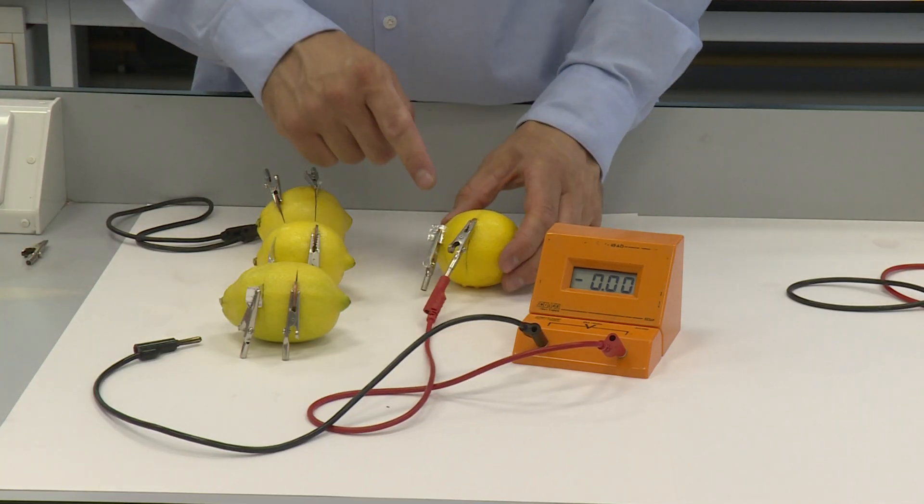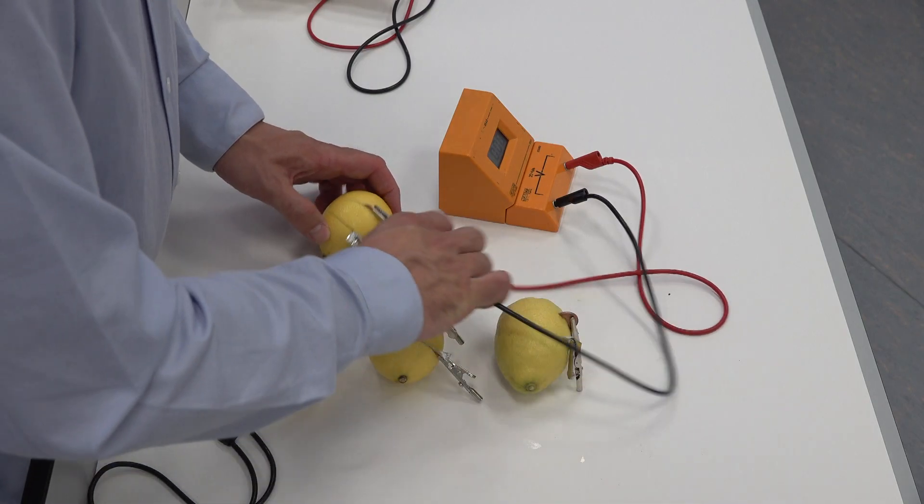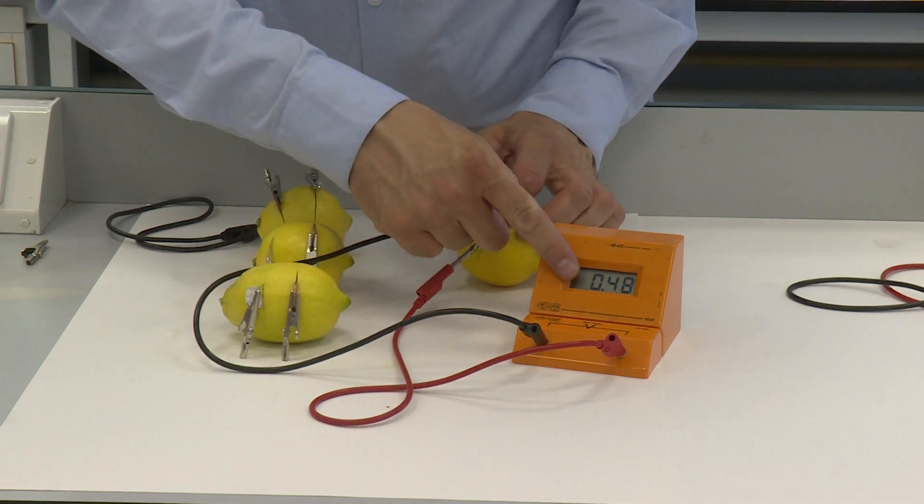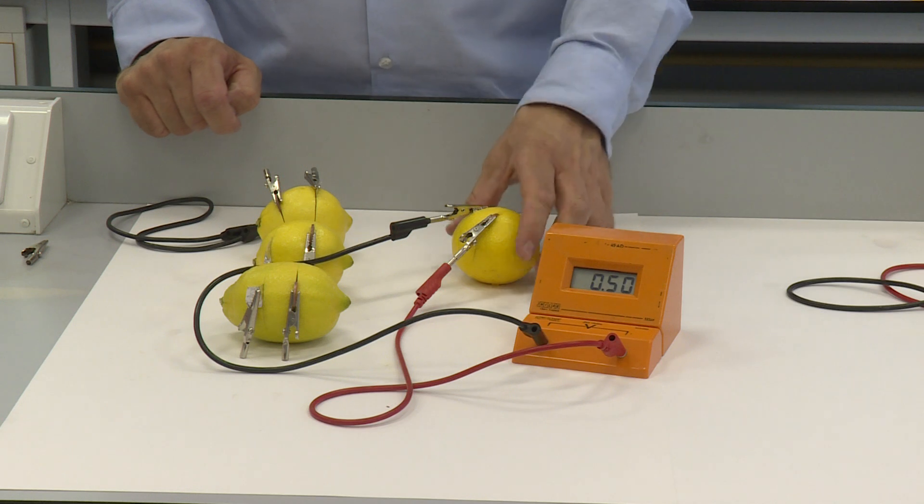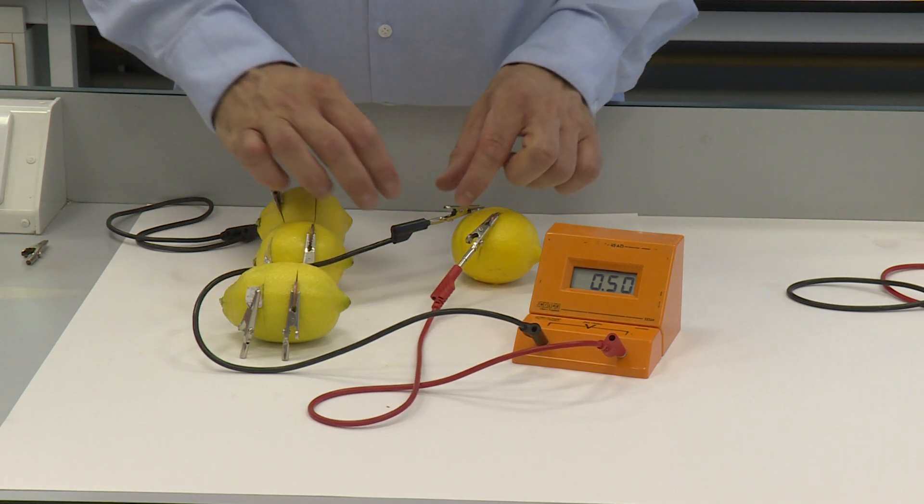So we've seen what happens when we put one lemon with a copper coin and a piece of aluminum foil across a voltmeter. We get a reading at the moment of 0.5, but that's essentially one lemon cell. Now we're going to change it so that it's a lemon battery.